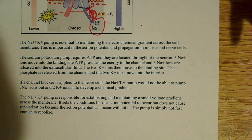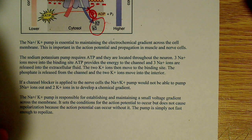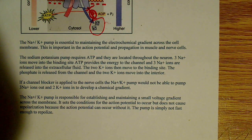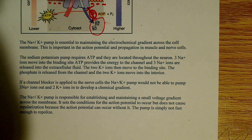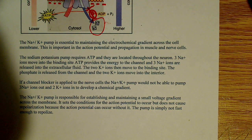So the sodium potassium pump requires ATP, and they're located throughout the neuron. So they're located in several places throughout the neuron, and it pumps three Na+ ions out, and two K+ ions come in, both against their gradient.